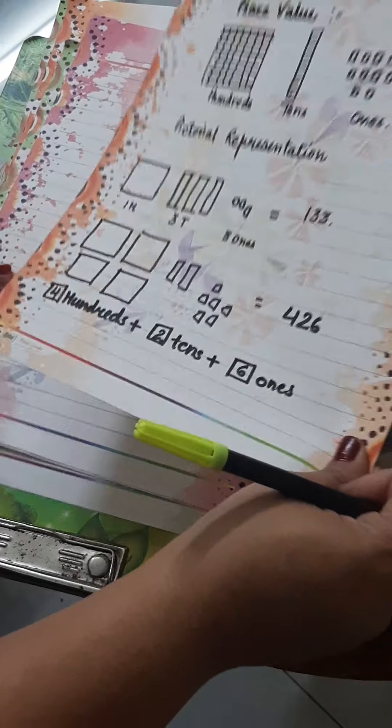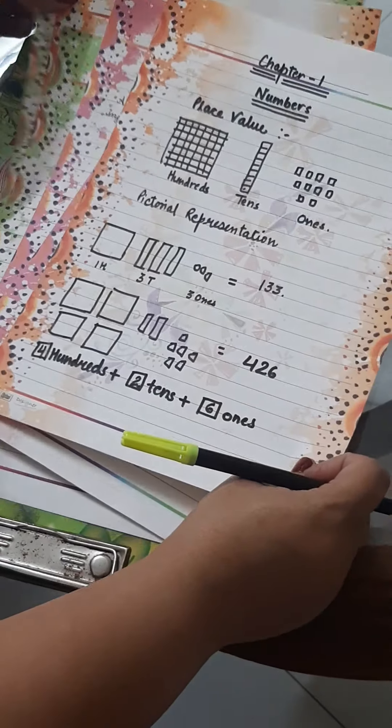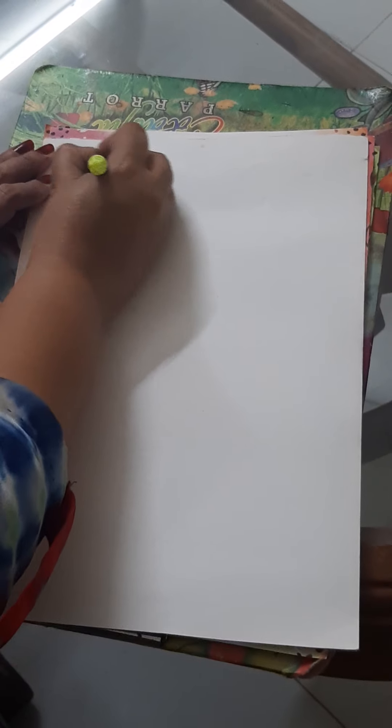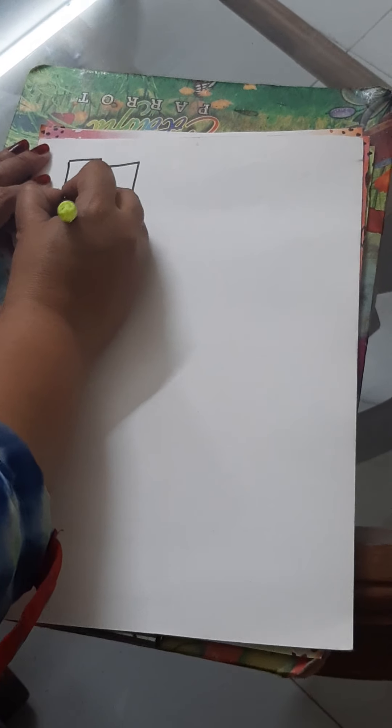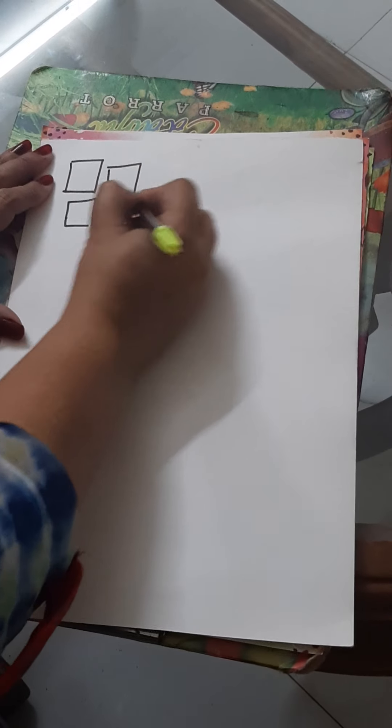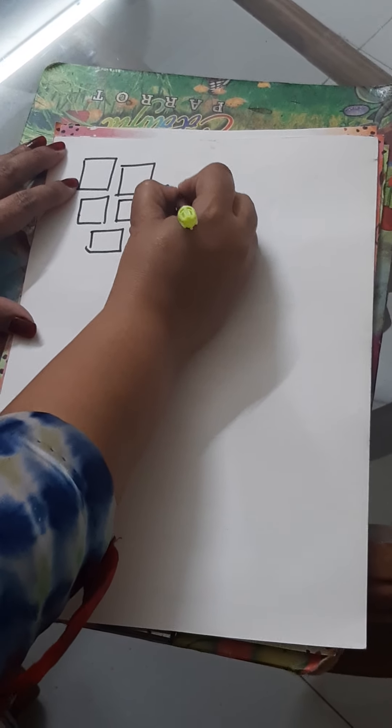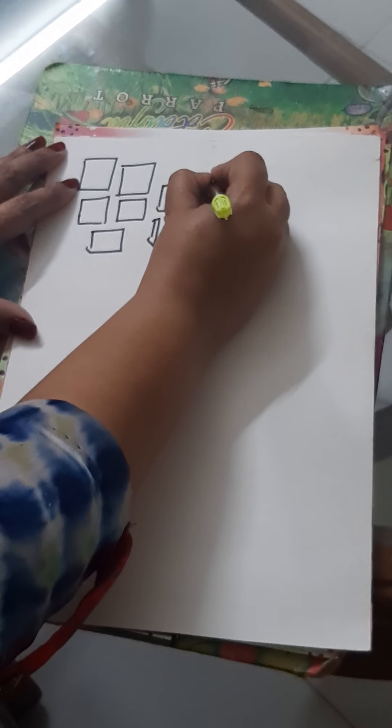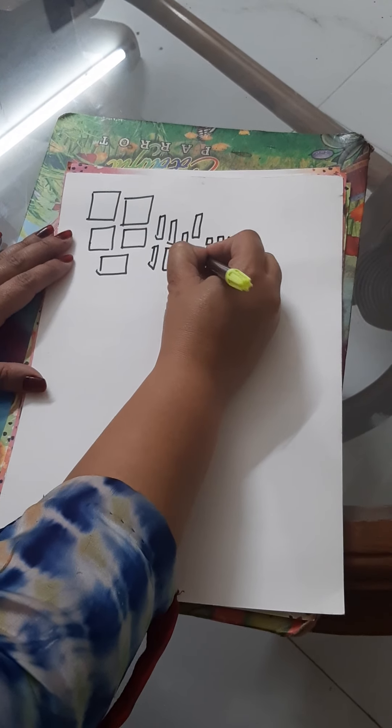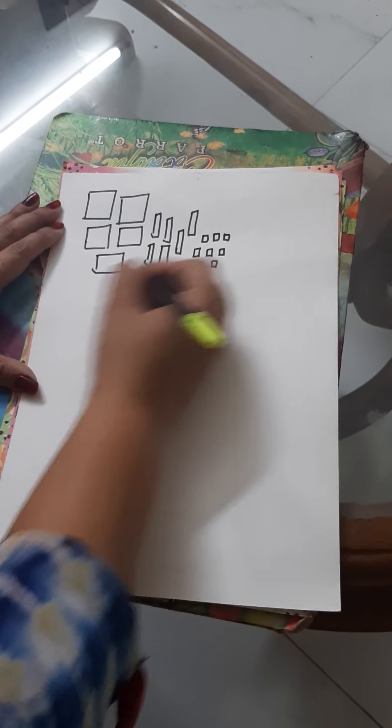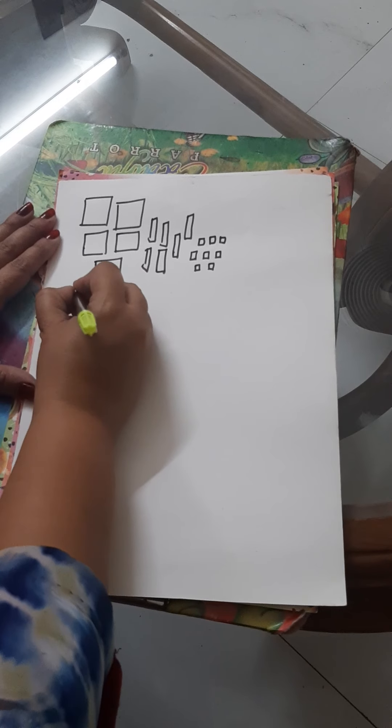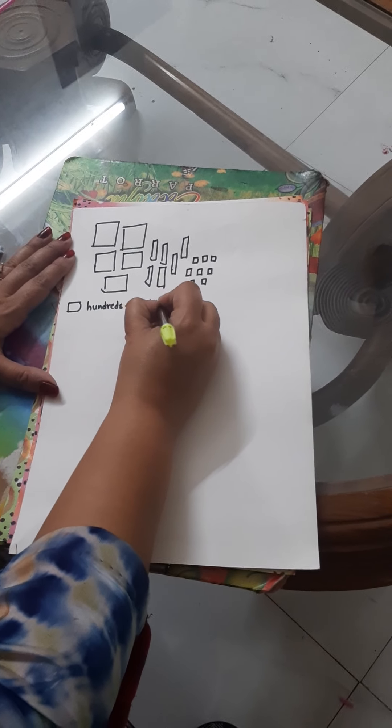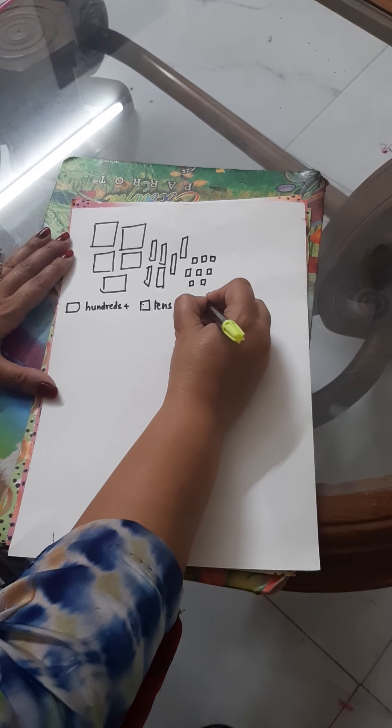Similarly, you have to present the number in different forms. Now, I am giving you a number and you will sort it out. How will you find the number? Dash hundreds plus dash tens plus dash ones.